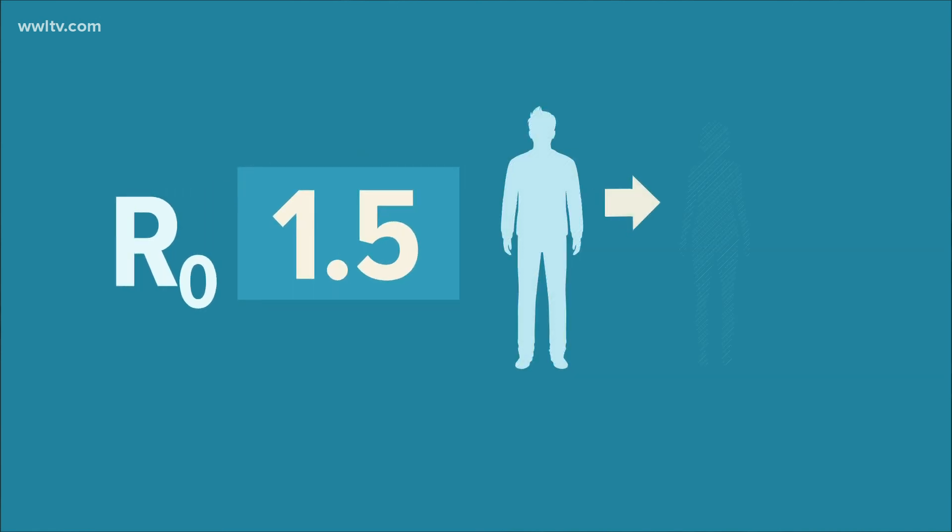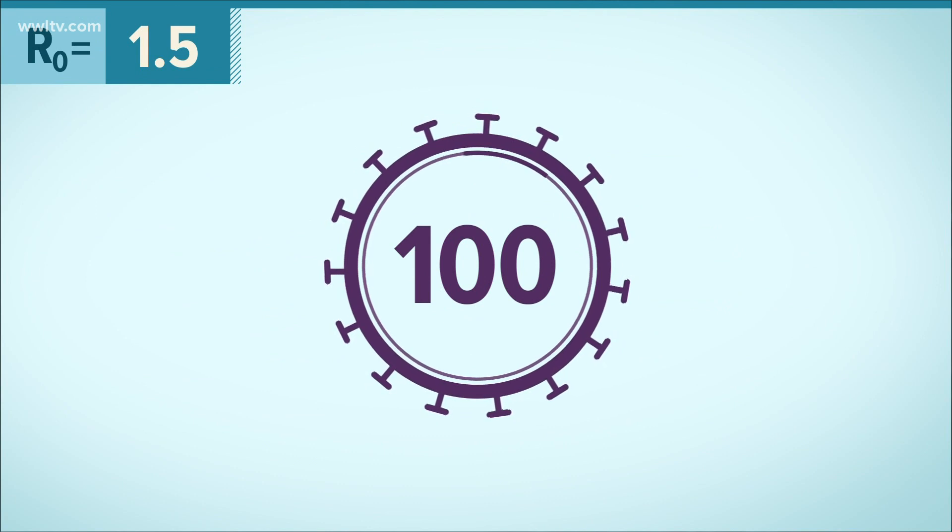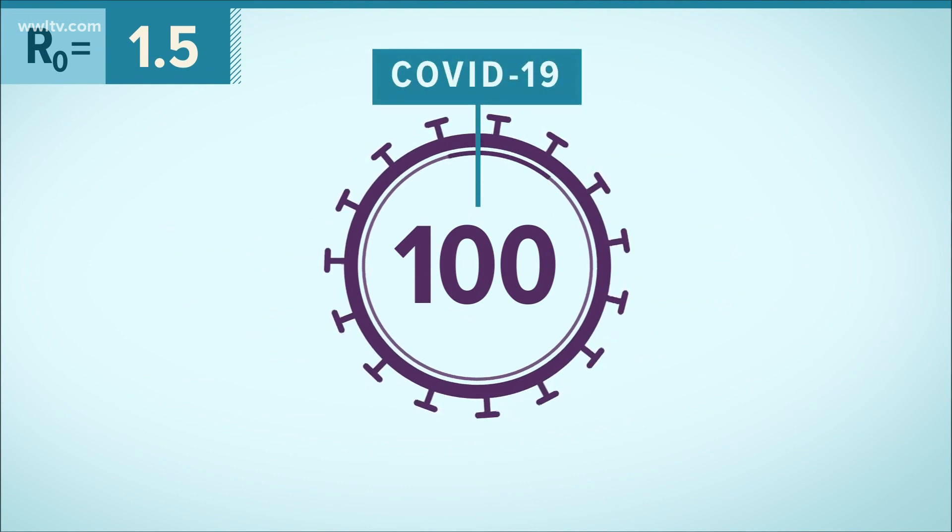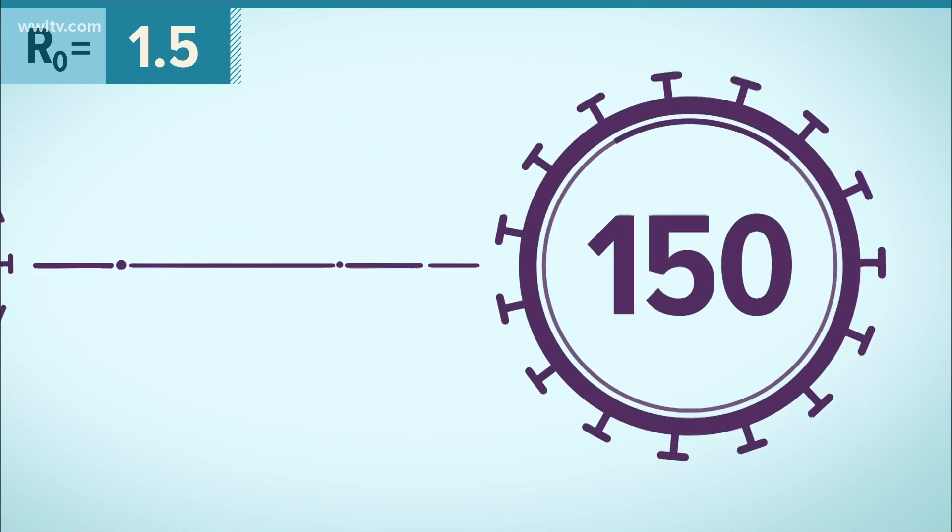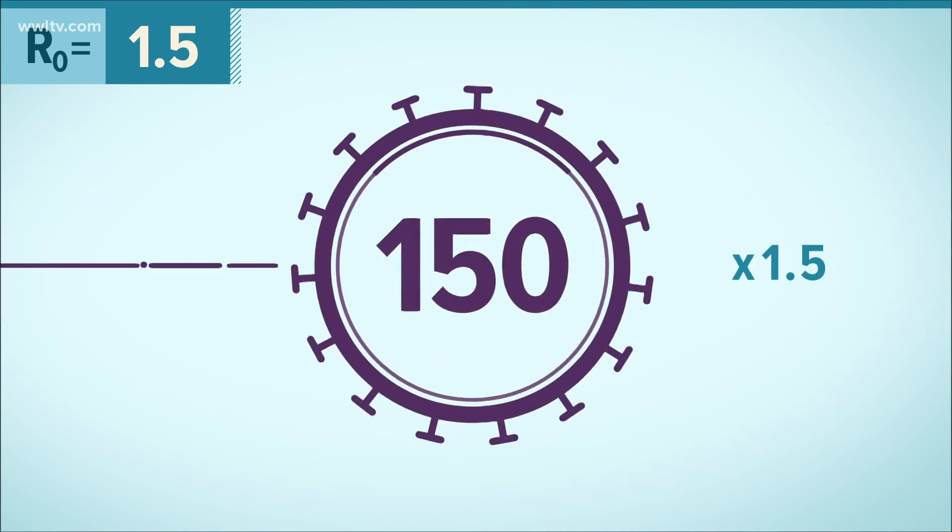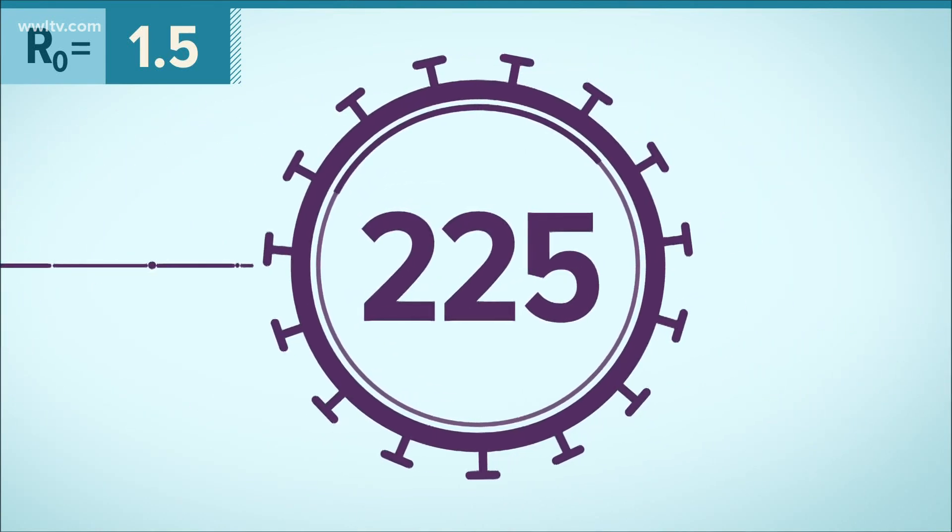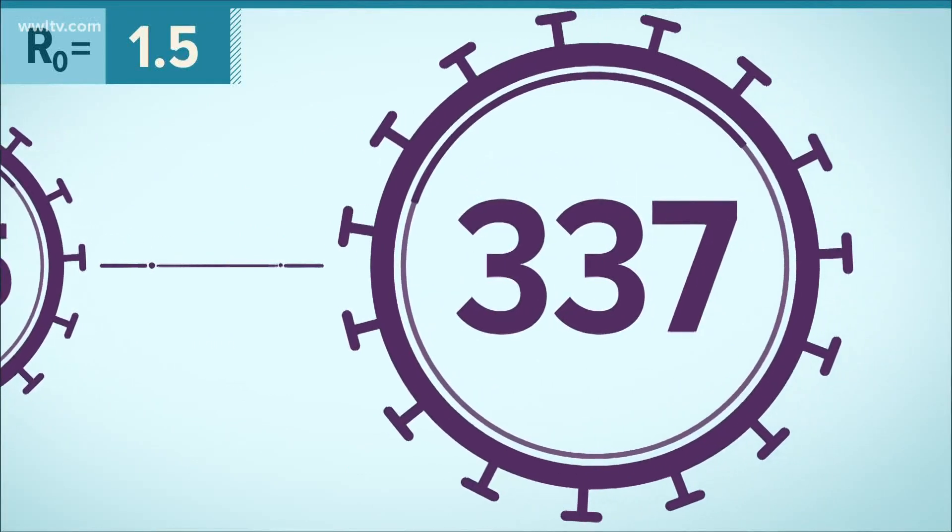So let's do the math. If the R-naught number is above one, like 1.5, that means each sick person is infecting one and a half other people. Let's take a group of, say, 100 people, all tested positive for COVID-19. 100 people would infect 150 people. Then each of those 150 would infect one and a half others. So now 225 people are infected. That group then infects another 337.